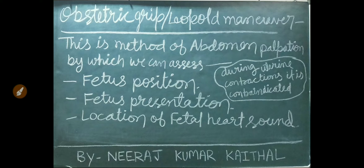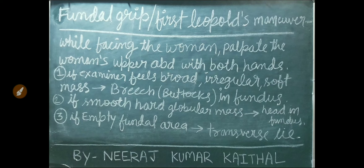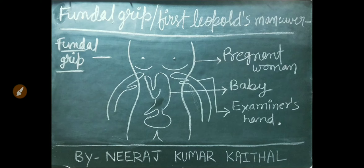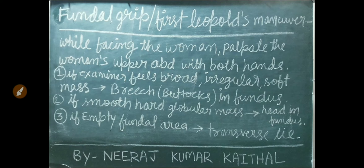During uterine contraction it is contraindicated. Now let's talk about the first Leopold's manoeuvre or fundal grip. While facing the woman, palpate her upper abdomen with both hands. In the diagram, a pregnant woman is lying on the bed and the examiner is facing her and palpating the fundal part of the abdomen. If the examiner feels a broad, irregular, soft mass during palpation, it indicates a breech in the fundus. If a smooth, hard, globular mass is felt, it means the head is in the fundus. If the fundal area is empty, it denotes a transverse lie.